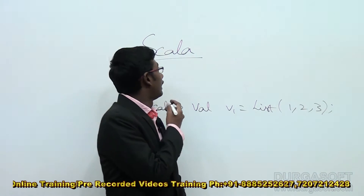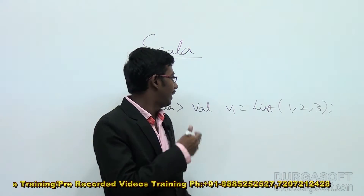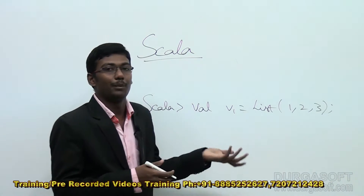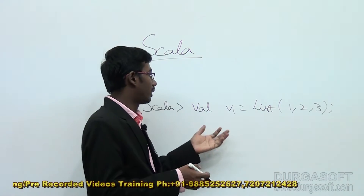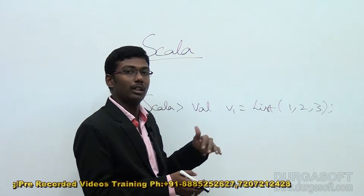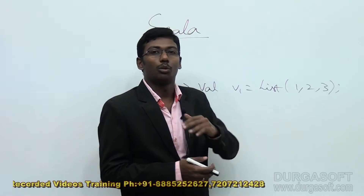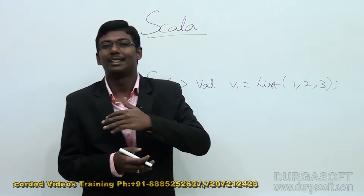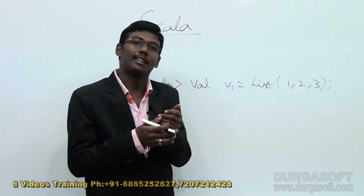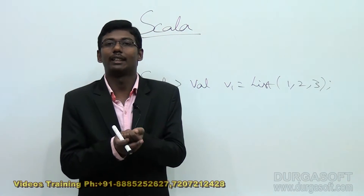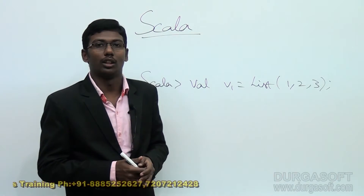Scala doesn't have primitives and wrapper classes, but it still has data types like those used in normal programming languages. All data types are supported — Boolean, integer, float, double — and string is also one of the data types in Scala. We can directly declare a string as a normal value itself.